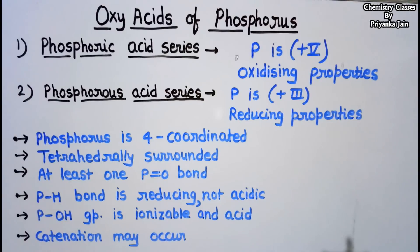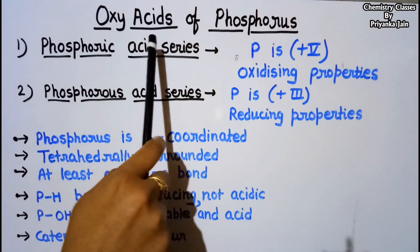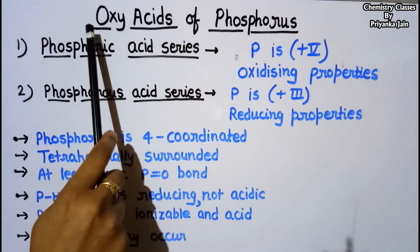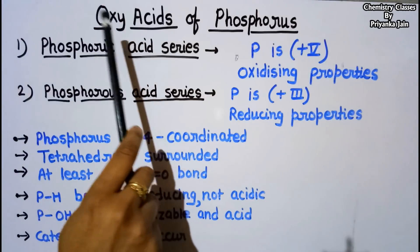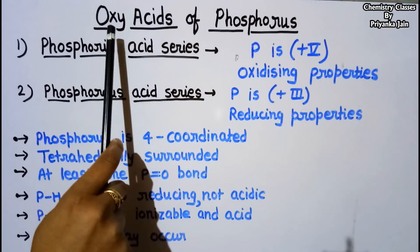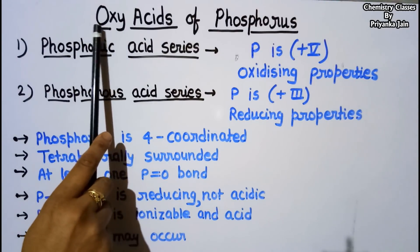Hello students. In our previous videos we have made many videos about the p-block elements, and there are so many requests to complete the p-block elements chemistry. Here we are providing only the vital topics coming in different types of competitive exams. We will now see the group 15 elements. The oxy acids of phosphorus is a very important topic from the point of view of competitive exams, as several questions may be asked and the questions are very simple.